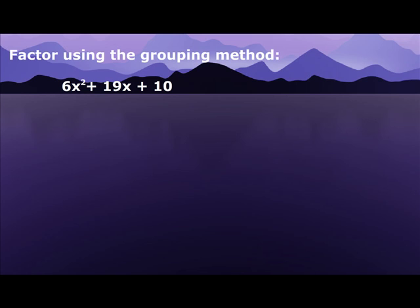Factor using the grouping method. So what I do is I look at my 6, which is also the A, and the 10, which is also my C, and I multiply them together. So 6 times 10 is 60.